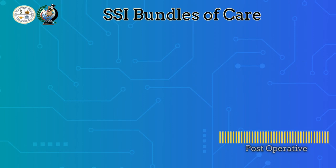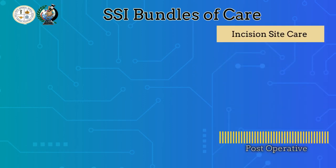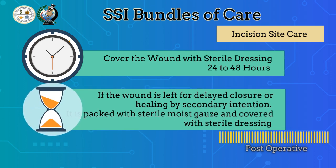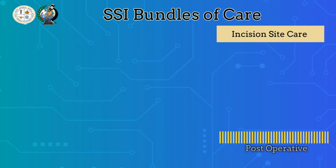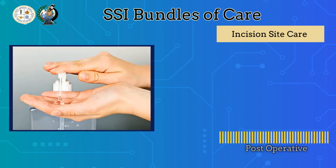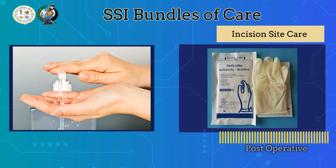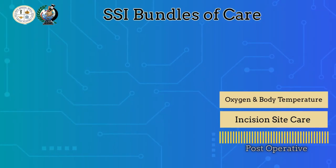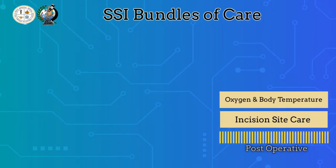Lastly for the post-operative phase, we have incisional site care. Proper attention and care to our patient's post-operative site is crucial. It is recommended for a surgical incision site to be covered with sterile dressing for 24 to 48 hours. If the wound is left for delayed closure or healing by secondary intention, it is packed with sterile moist gauze and covered by sterile dressing. When changing wound dressings, ensure hand hygiene and proper wearing of sterile PPE, and use strict sterile technique at all times.